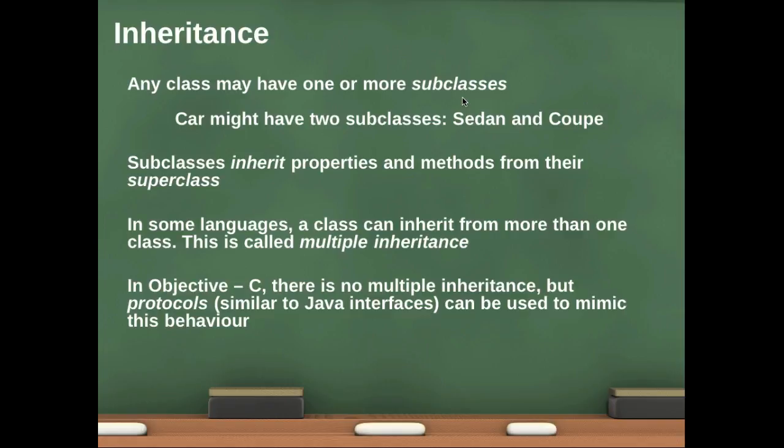Classes can also inherit from one another. So the way this works is that any class can have one or more children or one or more subclasses. So these are classes but they're subclasses of the primary class. For example, Car might have two subclasses: Sedan and Coupe. It could have more, it could have a sports car, it could have several different kinds of car, but they're all subclasses of Car.